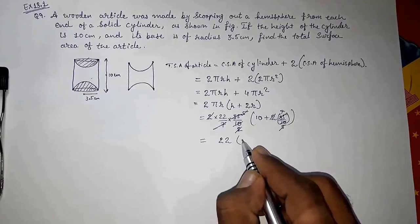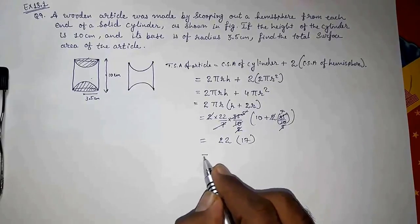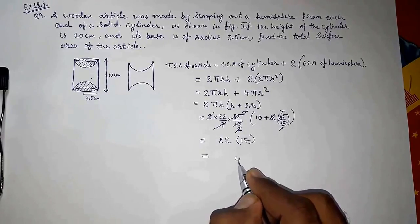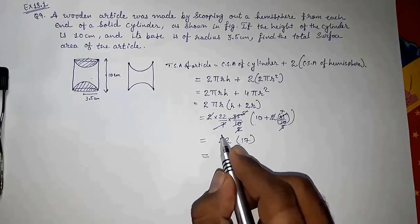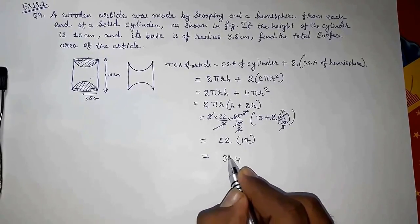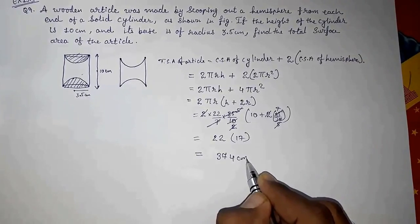So 10 plus 7 is 17. Now we have to multiply 22 and 17: 34, 3 carry, 34 plus 3, 374 centimeters square. So the total surface area of the remaining article is 374 cm².